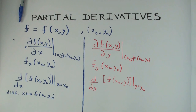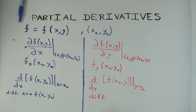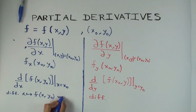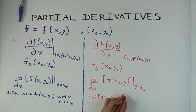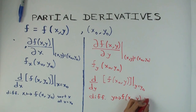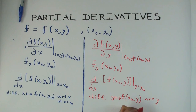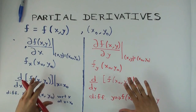On the other side, for the y-derivative, we are differentiating the function which sends y to f of x-naught comma y. Again, x-naught is a number, so this is a function of just one variable. You are differentiating this function of one variable with respect to that variable, evaluated at y equals y-naught.